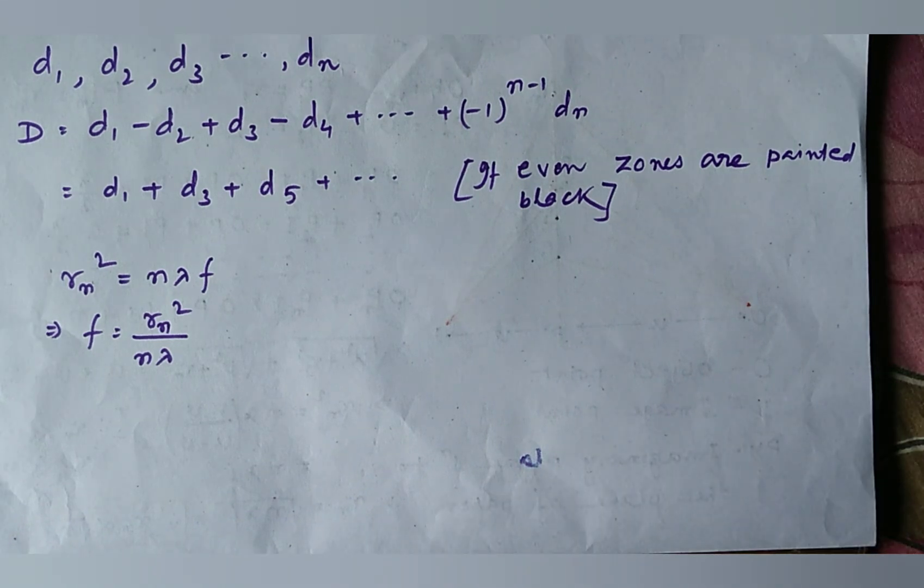The difference between the zone plate and converging lens is the converging lens has a unique focus. Whereas, a zone plate has multiple foci.